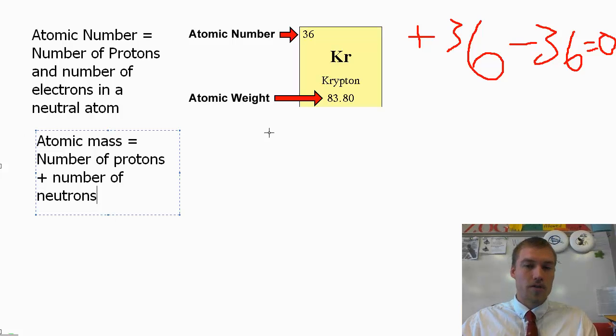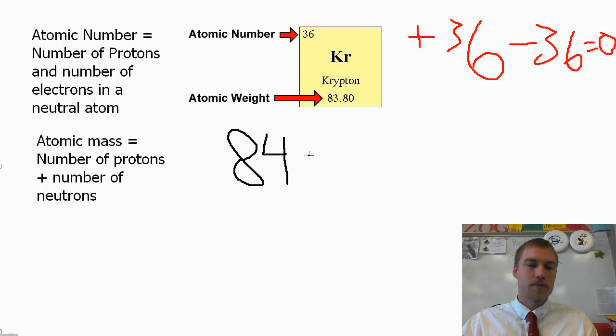So if we take a look at krypton, the atomic weight here is 83, so let's round it off to 84 and say that we're looking at krypton 84. And so what we're going to see is that 84 is equal to our atomic number, which is 36, plus the number of neutrons.